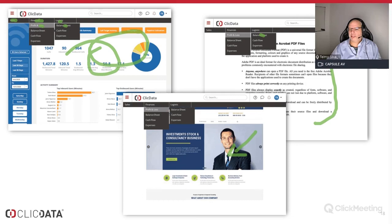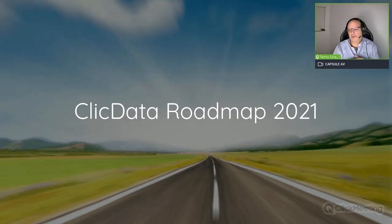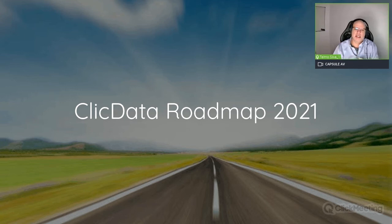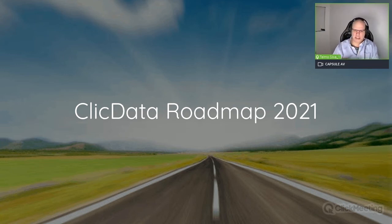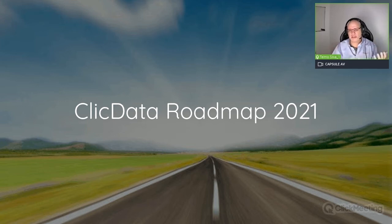Now let's talk about the ClickData roadmap for 2021. Aurora was really the foundation — we estimate being close to 75–80% done with the framework update. A few items like schedules and the support ticket section are left to do but should be done fairly quickly. It also laid the foundation at a very infrastructural level to move a lot faster in other developments.